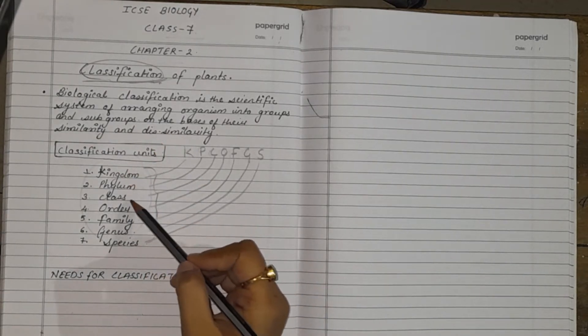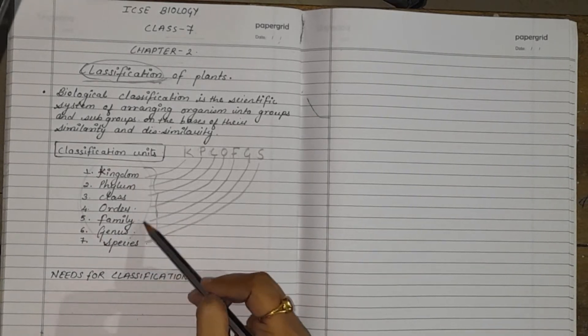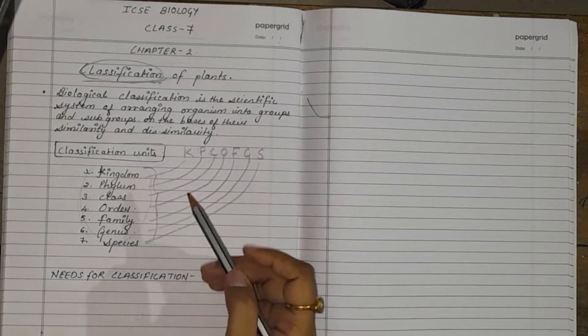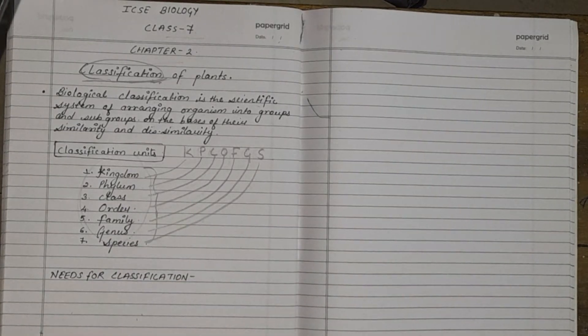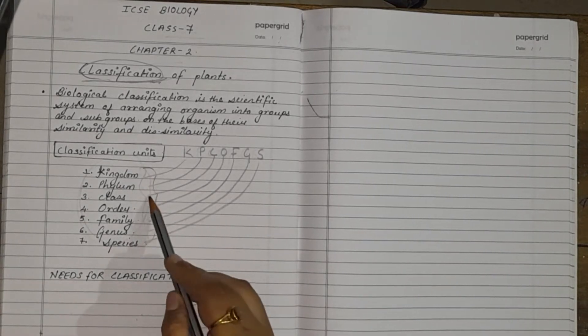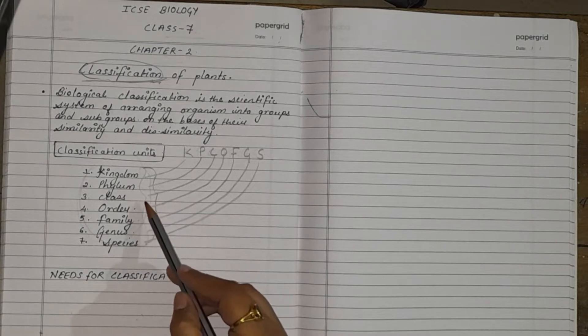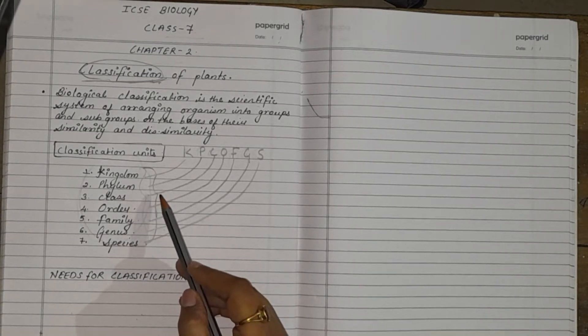This kingdom, phylum, order, family, genus, these all things are groups and subgroups. On the basis of specific characters, organisms are divided amongst specific classification units. Already I have told you about the classification units. These are the specific classification units in which we divide the organism.